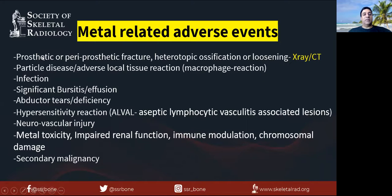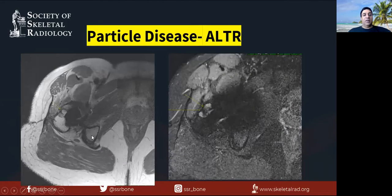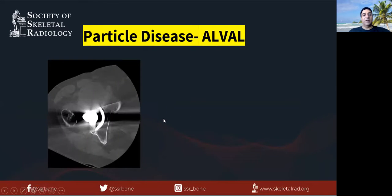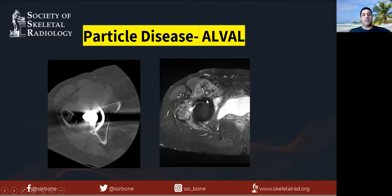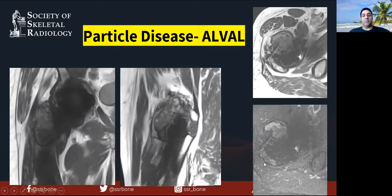Looking at adverse events: synovial expansion is a normal phenomenon where the capsule, broken by the prosthesis, expands into the bursa — you may see a little fluid which may be asymptomatic. With metal artifact suppression, you can see focal areas of increased signal representing particle disease or adverse local tissue reaction. These can be huge, as seen in this case on CT and MRI showing extensive synovial thickening and bone involvement — these are hypersensitivity reactions. Particle disease is macrophage-predominant, while lymphocyte-predominant reactions are called ALVAL. In another case with bilateral arthroplasties, CT shows little, but MRI reveals extensive ALVAL and particle disease.